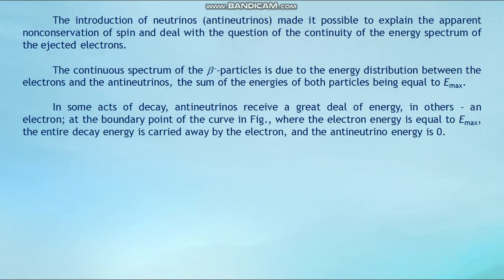The introduction of neutrinos and anti-neutrinos made it possible to explain the apparent non-conservation of spin and to account for the continuity of the energy spectrum of the ejected electrons. The continuous spectrum of beta minus particles is due to the energy being distributed between the electron and the anti-neutrino, with the sum of the energies of both particles equal to E_max. In some decay acts the anti-neutrino receives most of the energy; in others, the electron does. At the boundary point of the curve, where electron energy equals E_max, the entire decay energy is carried by the electron and the anti-neutrino energy equals zero.